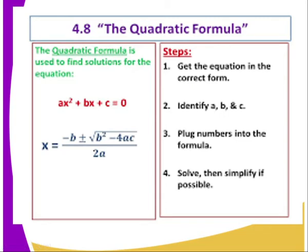We have the formula on the screen. When using the quadratic formula, the steps to follow are: first, get the equation in the correct standard form; second, identify a, b, and c; third, substitute the values into the formula — where there is b, replace with b; where there is a, replace with a; where there is c, replace with c. Then simply solve the equation, using a calculator or another method.